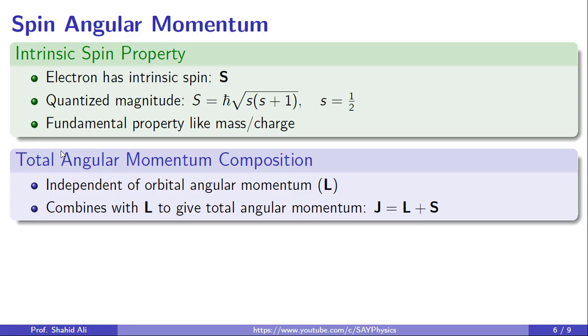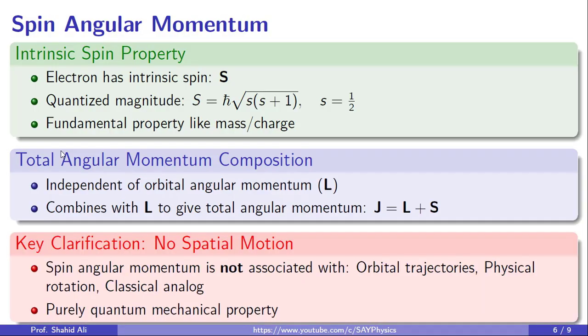Now, how does this relate to total angular momentum? Spin angular momentum s and orbital angular momentum L are independent quantities. Together, they combine to form the total angular momentum given by j equal L plus s. This total angular momentum becomes particularly important when we consider interactions like spin-orbit coupling, which affects atomic energy levels and spectral lines. However, it is crucial to not confuse spin with classical motion. As noted in the final block, spin angular momentum does not involve any lateral rotation of the electron around an axis. There is no tiny spinning sphere or orbit. Spin has no classical analog. It is a purely quantum mechanical property, deeply embedded in the mathematical framework of quantum theory. So even if L equals zero, the electron still has angular momentum, its spin.